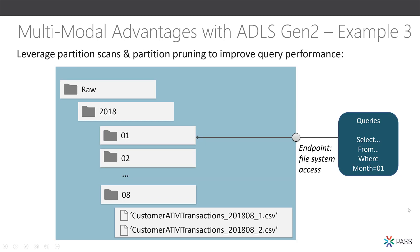Whereas in a hierarchical file system, that partitioning operation is a metadata-only operation. Third, if you are running user queries and want to pull records from month 01, utilizing the hierarchical file system endpoint lets you leverage partition pruning and improve query performance, because the compute engine — such as Databricks — knows how to navigate that folder structure and only pull back the relevant data.